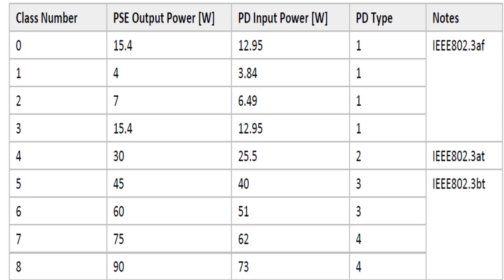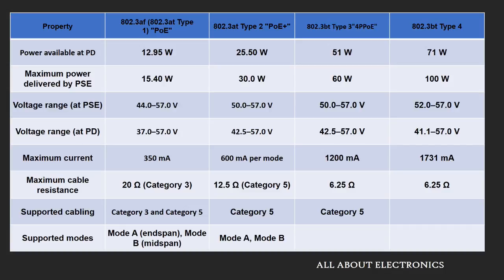These are the different classes of power supported by these three different standards. According to the standard supported by the powered devices, these powered devices are classified under four different types. Here is the complete list of the different properties of each standard — such as maximum voltage, maximum current, maximum cable resistance, and many other specifications under each particular standard.